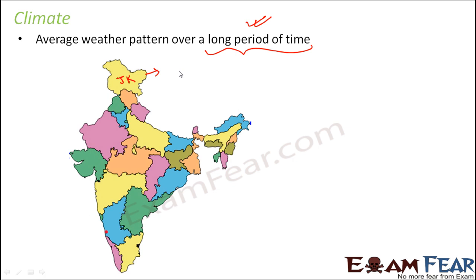When we say cold climate, that means that if you look at the average weather pattern of Jammu and Kashmir, then you would see that most of the time it is cold.